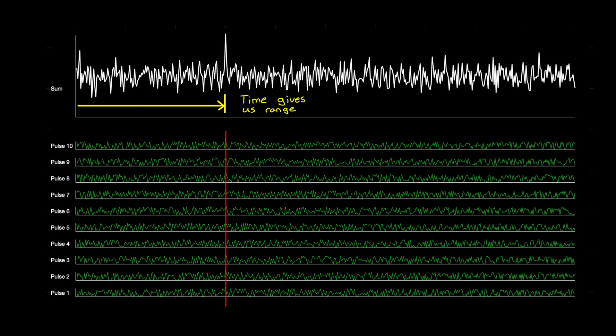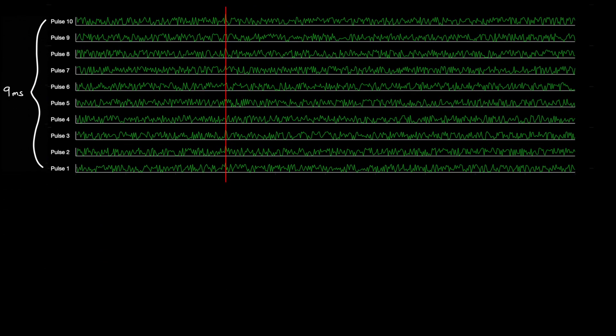So 10 pulses are separated by 9 milliseconds. And how far can an object travel in 9 milliseconds? Well, if it's traveling 180 meters per second, or 400 miles per hour, then the object would have traveled about 1.5 meters.